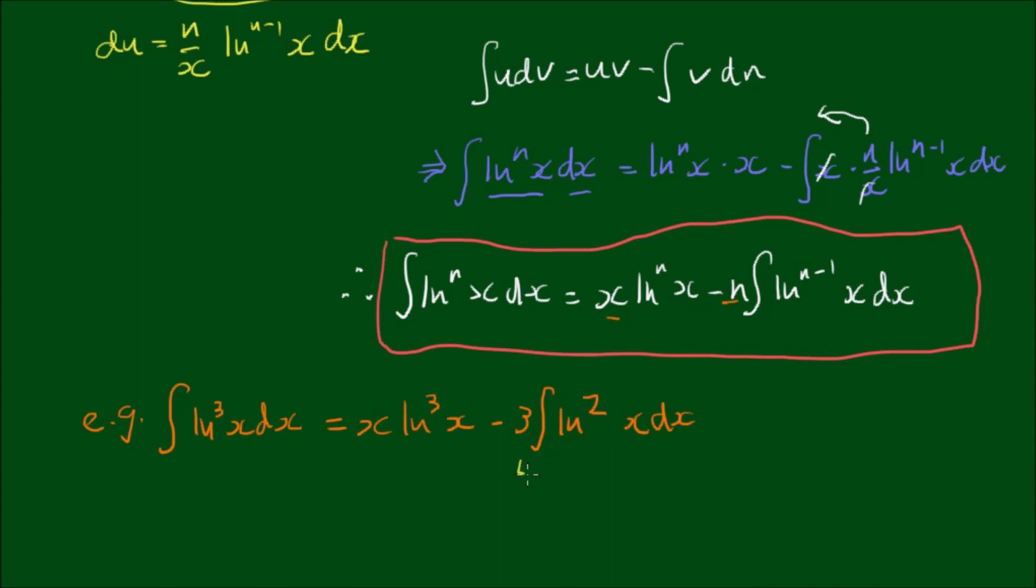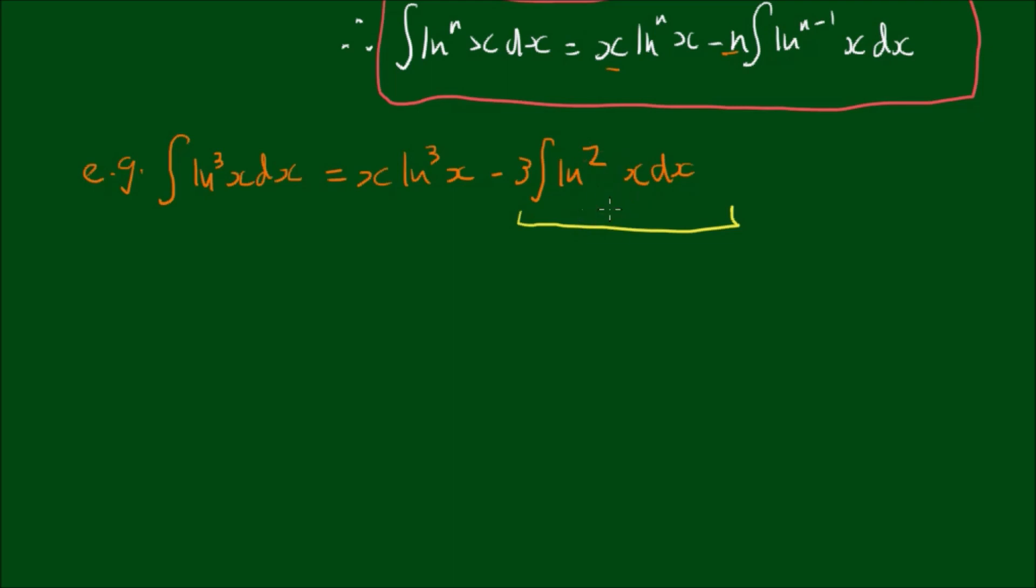So now we have to find this guy here. But luckily in a previous video we have already found this result. I'll link a video to how we found this one, but because I'm lazy I'm just going to substitute the result in. So we have x by log cubed of x out the front minus 3. And the integral of log squared of x is equal to x outside of log squared of x minus 2 by the log of x plus 2.